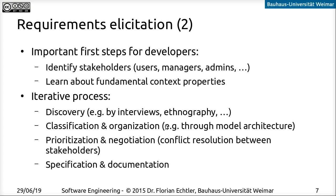This is once again an iterative process. First we try to discover information about the stakeholders and the context — using interviews or a process called ethnography. Then we try to organize the information gathered, then prioritize it, which is very important because individual stakeholders will often have different and sometimes conflicting priorities regarding which features are most important. Last but not least, we need to document what we find in a structured way. We usually run through this several times — each phase can be quite short, but running through it multiple times lets us verify with people that we captured everything.